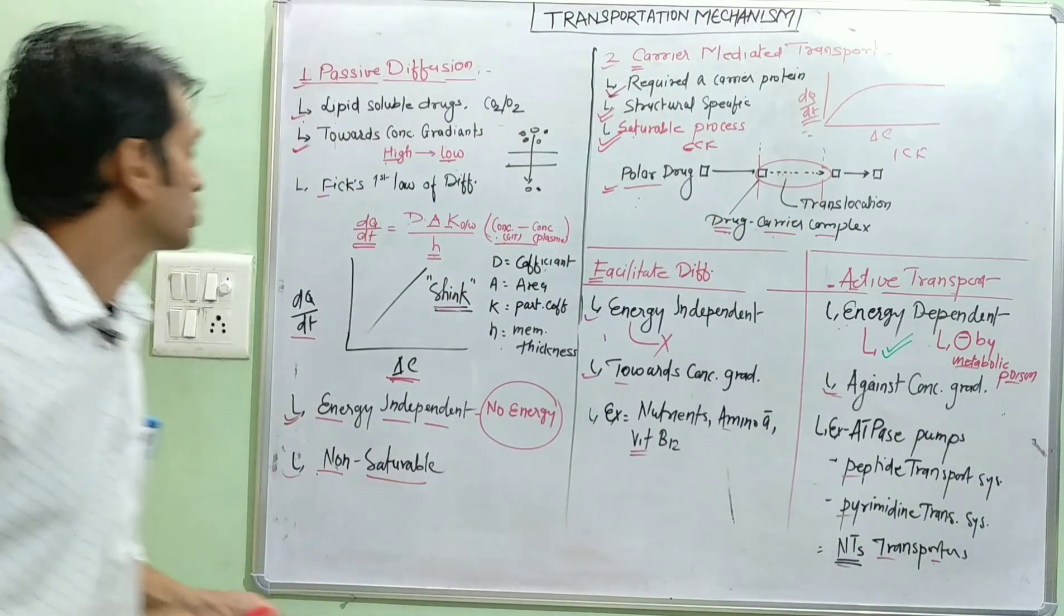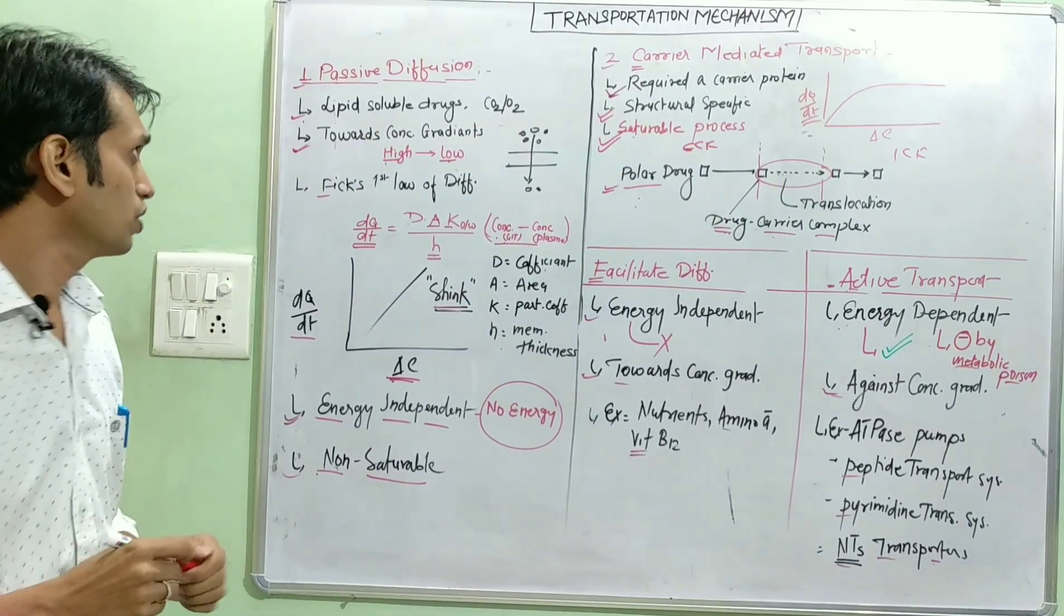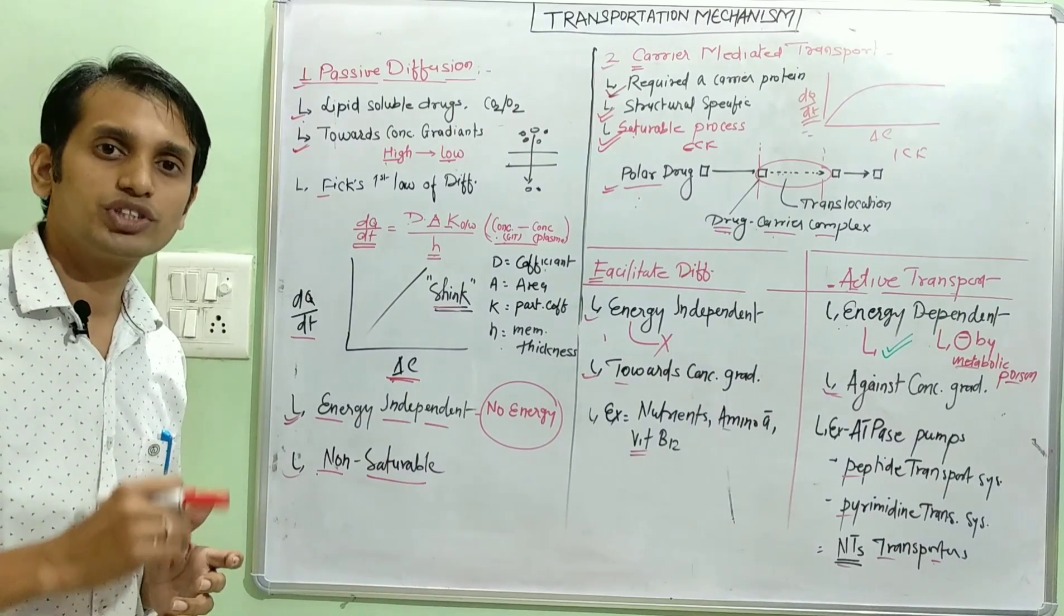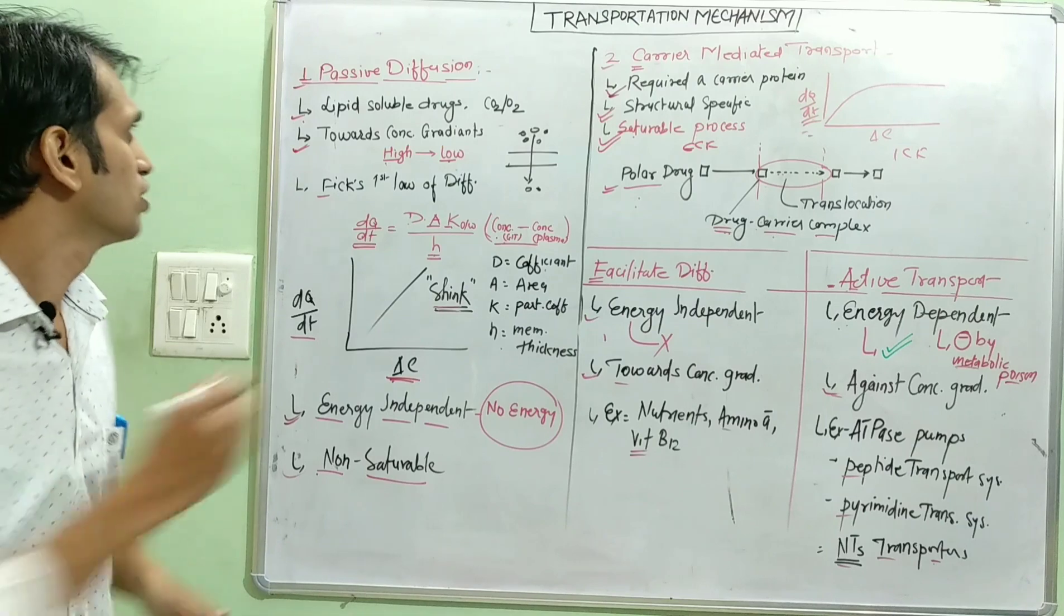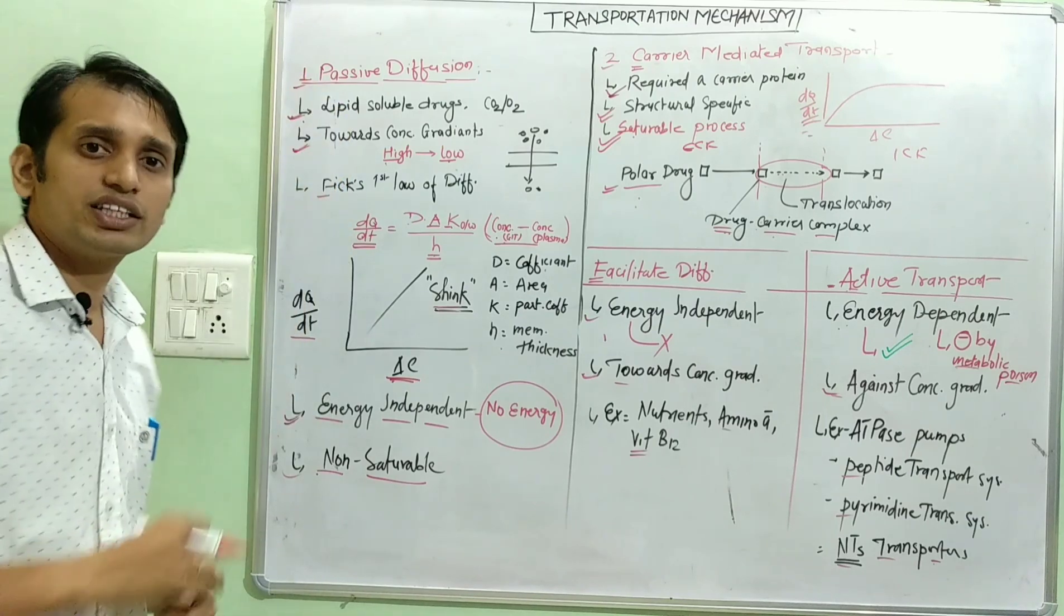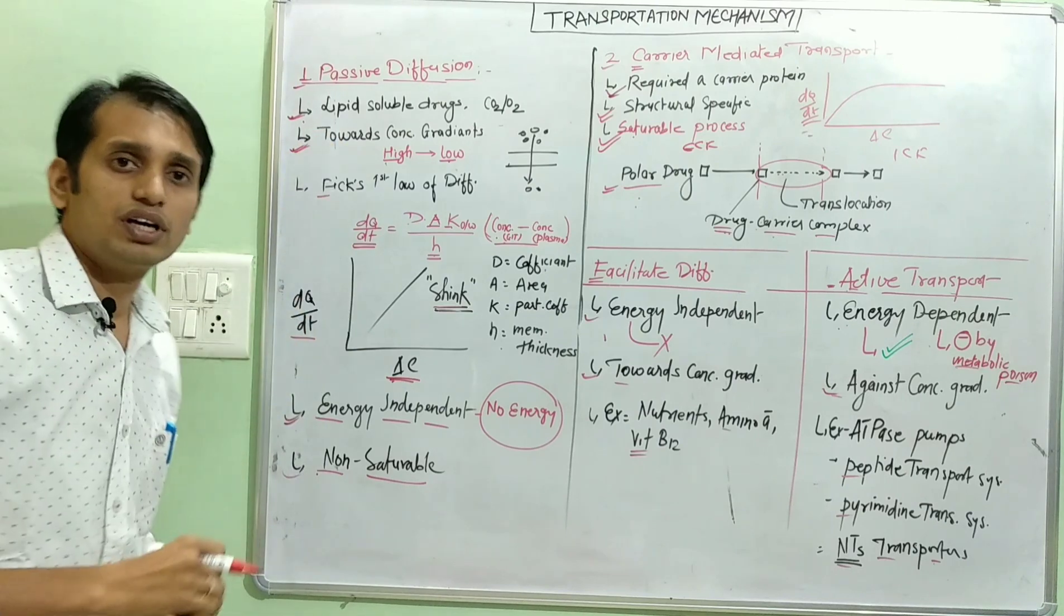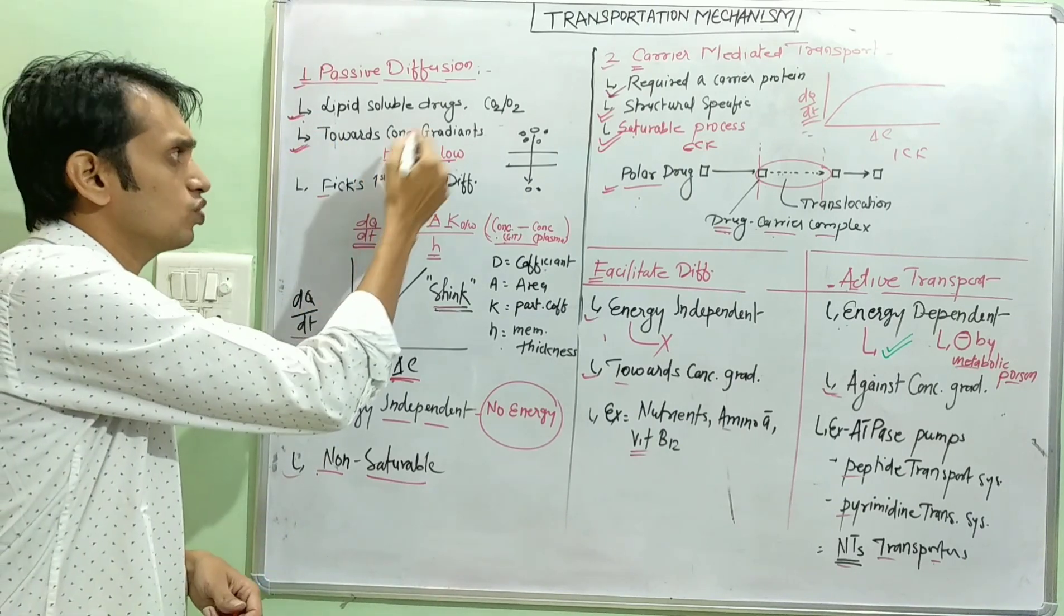So come to the passive diffusion process. Mainly lipid soluble drugs can cross the biological membrane through passive diffusion process. First is the lipid solubility, and second is it occurs towards the concentration gradient, means high concentration to low concentration.